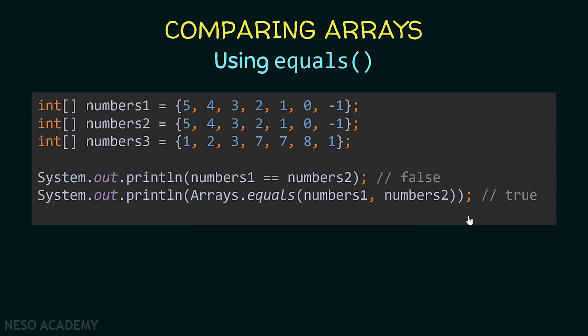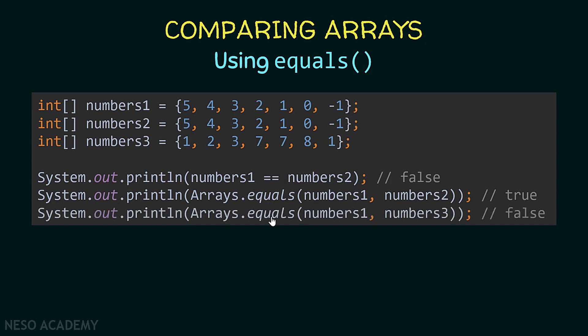In this case we will see true, because as we said all the elements are equal. Now I'm comparing numbers one with numbers three — in this case we will see false printed because obviously this array is not equal to that array.